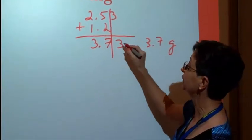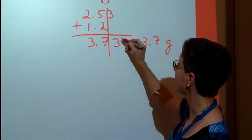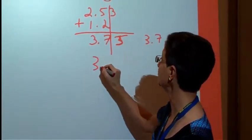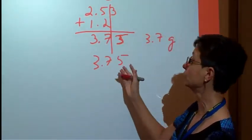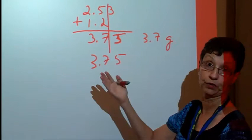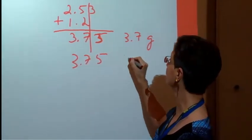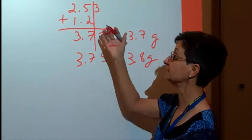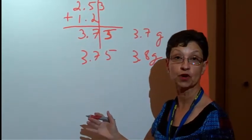Alright, now, what if this number is a 5? In that case, if we have 3.75, we're going to round up as we generally do, and the answer will be 3.8 grams. The same holds true for subtraction.